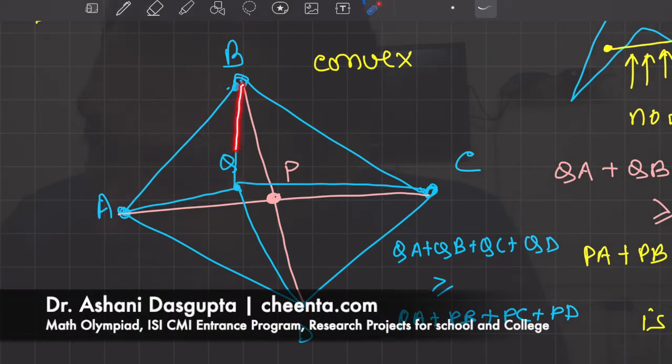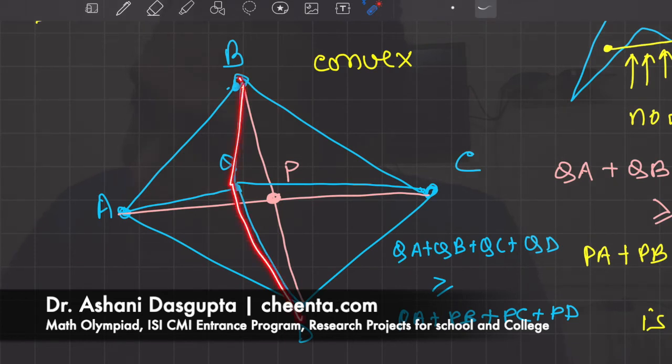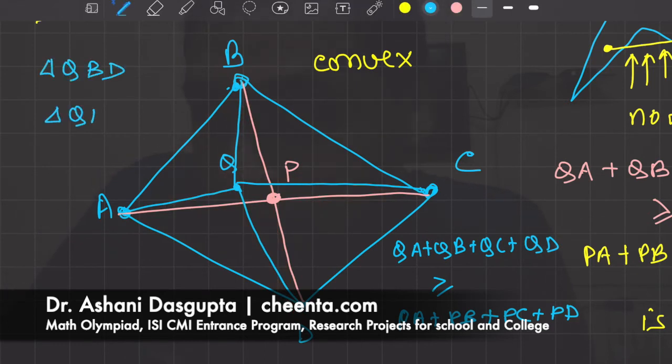Let's look at the two triangles QBD and QAC. Triangle QBD, triangle QAC—apply the triangular inequality in these two triangles. That's it, that's all you have to do. Apply the triangular inequality and give me an argument why P is the minimal point.